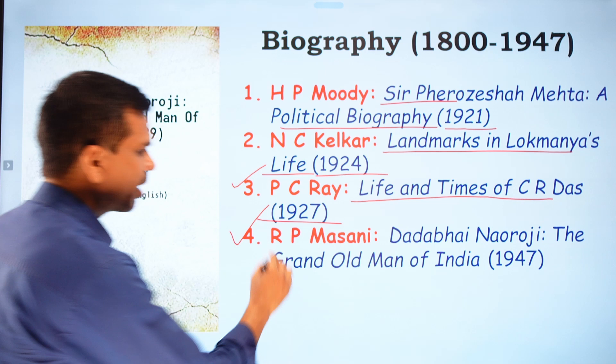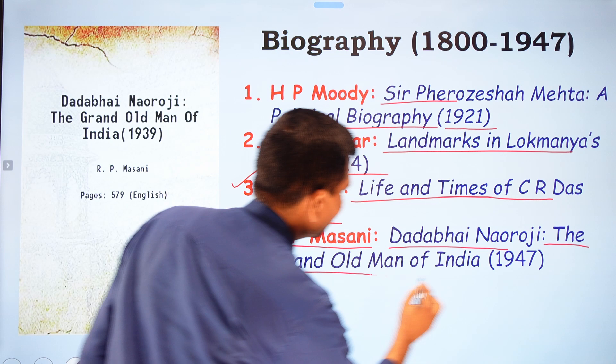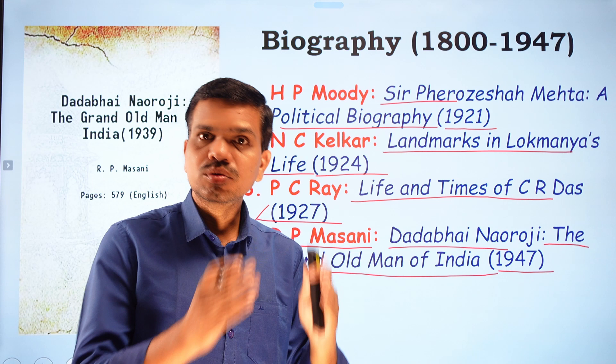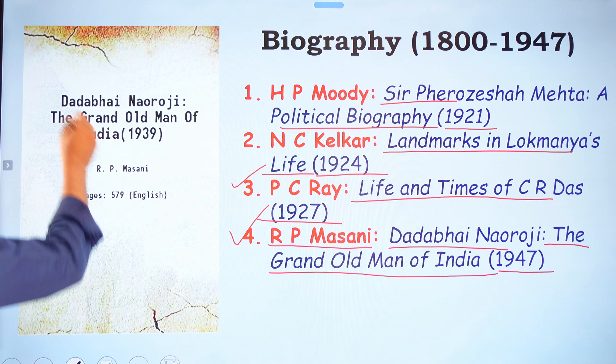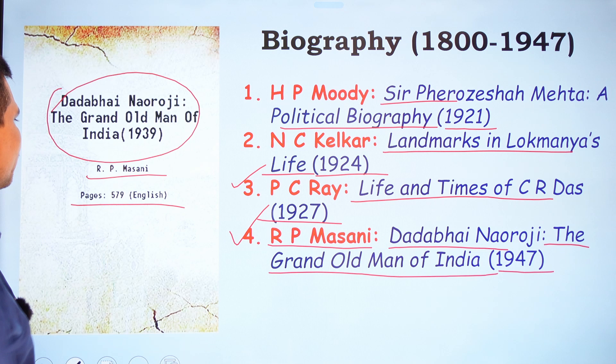A very famous biography is Dadabhai Naoroji: The Grand Old Man of India (1947) by R.P. Masani. Dadabhai Naoroji was widely called the Grand Old Man of India. This biography is 579 pages long, written in English, and is an important early English biography.